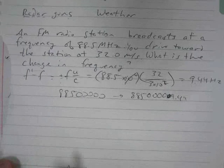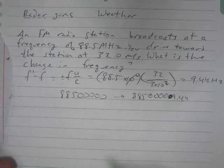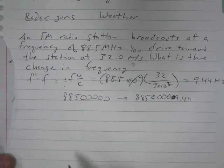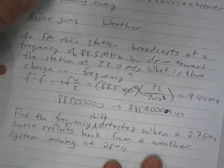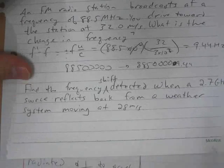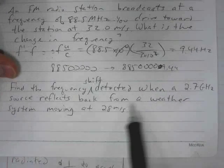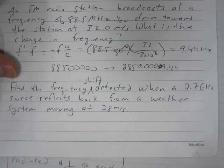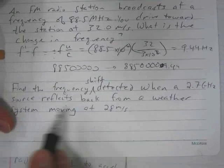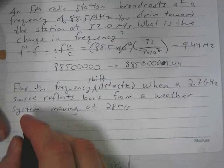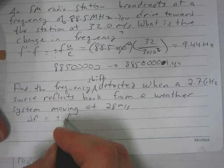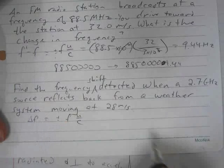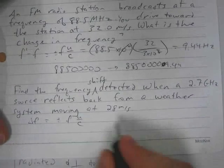Speaking of Doppler radar, let's take an example of a weather system. I'm going to find the frequency shift detected when a 2.7 gigahertz source reflects back from a weather system moving at 28 meters per second. Again, frequency shift. So our change in frequency is plus or minus F times u over c.